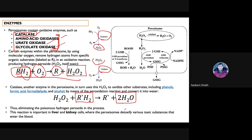Peroxisomes are especially important in liver and kidney cells. The liver is involved in detoxifying and cleaning the blood to remove different toxicants from the circulatory system, where chemical reactions can produce hydrogen peroxide. Similarly, kidneys are related to excretion, and the same hydrogen peroxide production can occur in kidney cells.